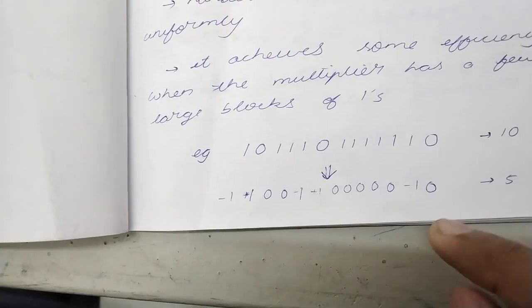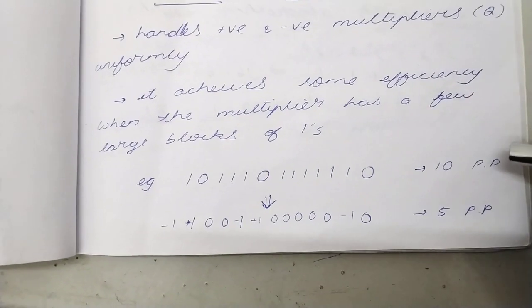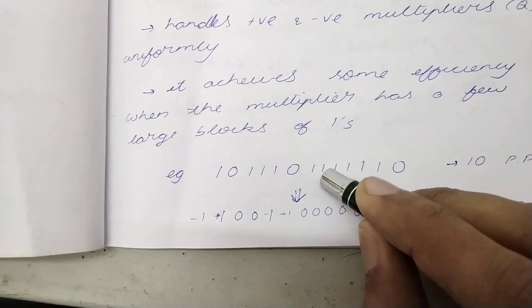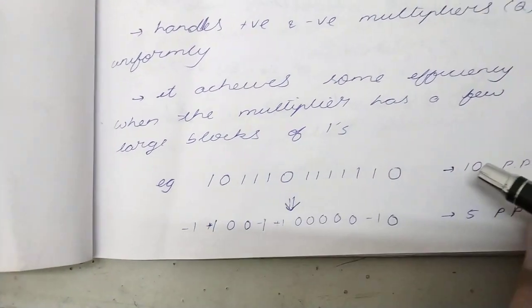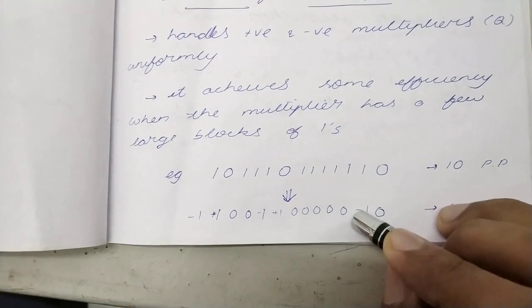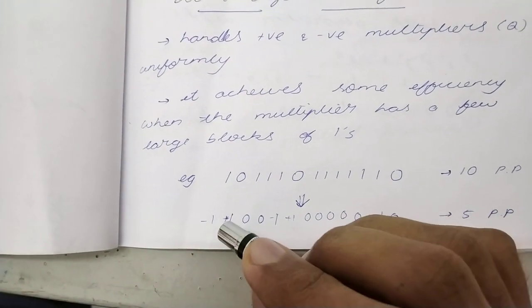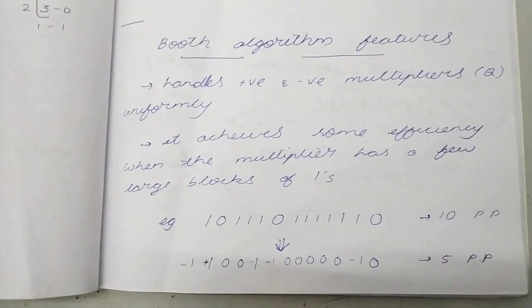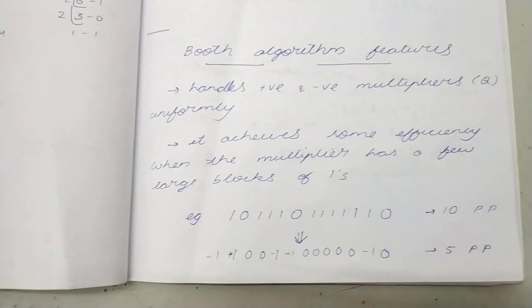These all will not be counted as partial products. So how many partial products will be there in this case? 10 partial products will be there. What about this case? Only 5 partial products. So that's how it reduces the number of partial products.